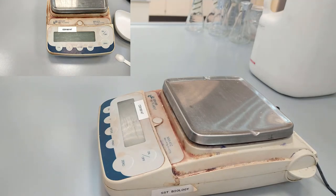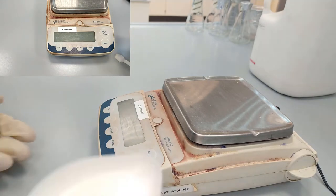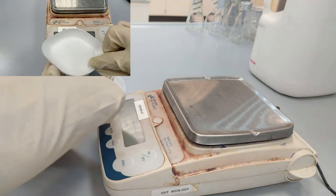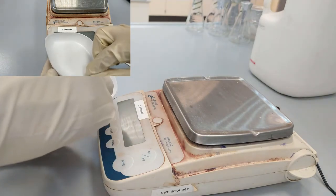As you've seen in the previous part, we need to prepare 100 milliliters of 1.2 molar concentrated glucose.